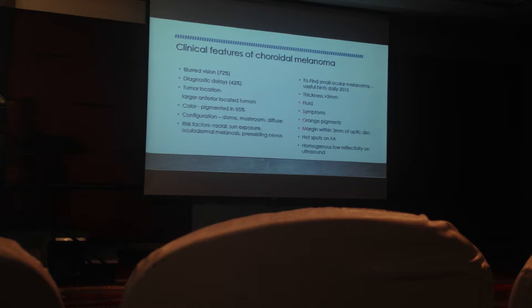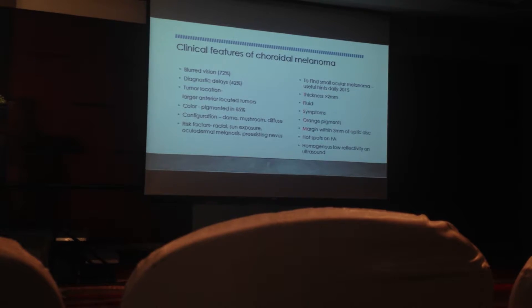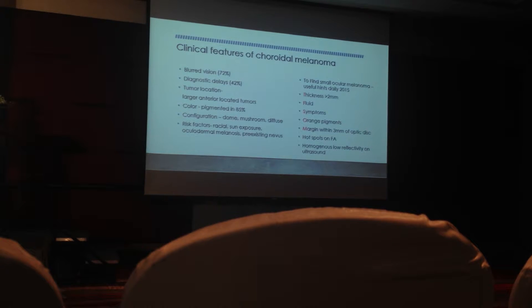Most tumors are pigmented, and in some cases they are lightly pigmented — what we call amelanotic melanoma. The tumor configuration could be dome-shaped, mushroom-shaped, or the diffuse type. There are some risk factors for uveal melanoma such as racial factors, sun exposure, and a pre-existing nevus. In my practice I mostly see medium or large size uveal melanomas, but it is important to find small melanomas as suggested by Dr. Shields.